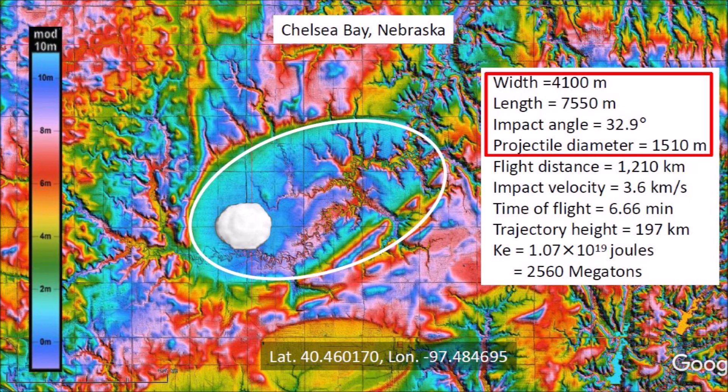The angle of impact calculated from the width-to-length ratio is 32.9 degrees. Estimating the projectile diameter as one-fifth of the bay length indicates that the ice projectile that made the bay had a diameter of 1,510 meters — that is one and a half kilometers, or almost a mile wide in English units.